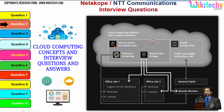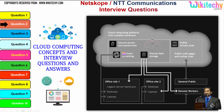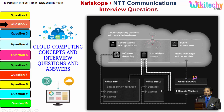Cloud computing has a public access area — public web pages for end users — and apart from this there is secure data access, shared data storage, and software streaming. Companies can use it as a private kind of cloud, and the public can use it to access web pages or websites. This is how cloud computing works.